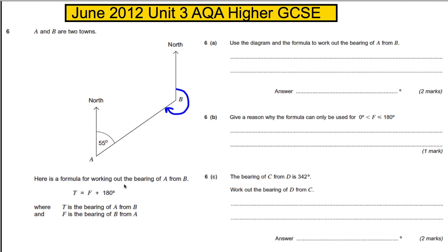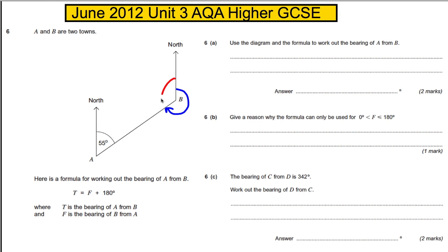Before you overthink this, let's think about how we would work out that bearing. If we know this angle is 55, then we know this one must be 180 subtract 55.